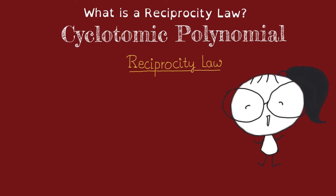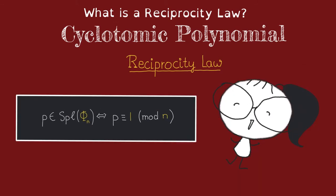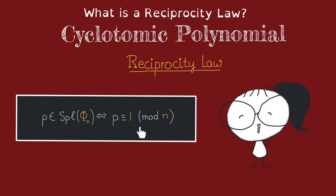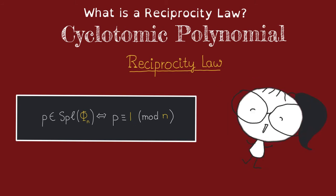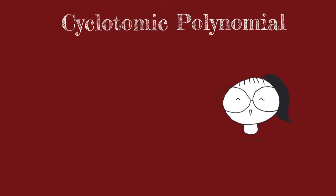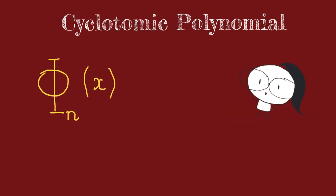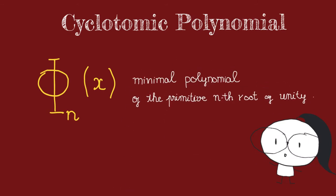It turns out that the answer is yes! The set of primes that the cyclotomic polynomial split over can be given by a congruence condition. So let us see why. First, let's review the definition of a cyclotomic polynomial. A cyclotomic polynomial is just the minimal polynomial of the primitive nth roots of unity.